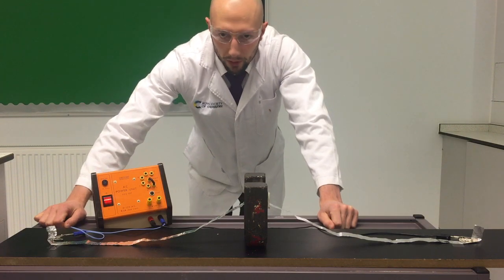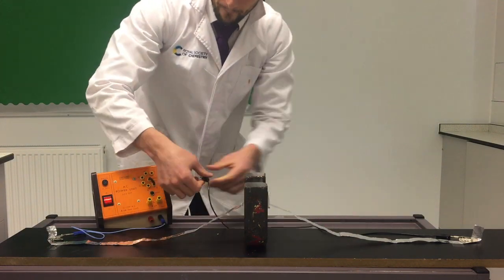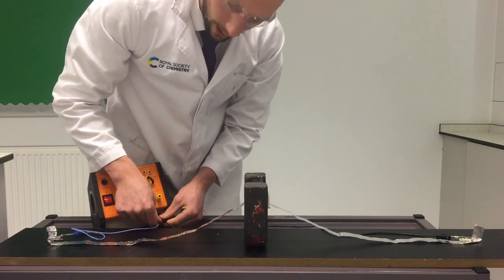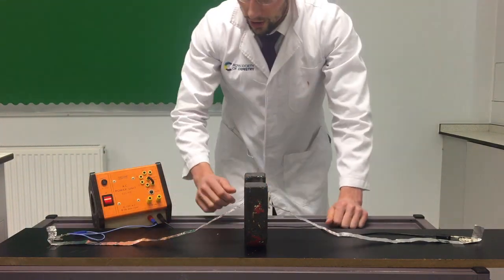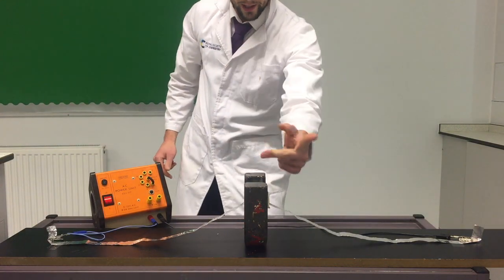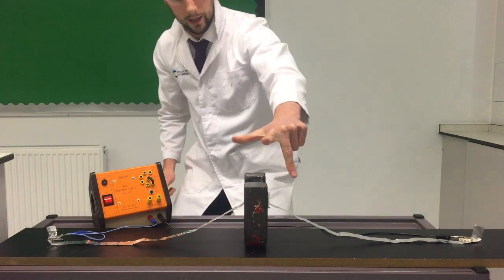That's pretty cool. Now what I'm going to do is I'm going to swap the terminals on the power pack. So now I've got the current running the other way. Still got the magnetic field going that way, current is now going the other way like that.